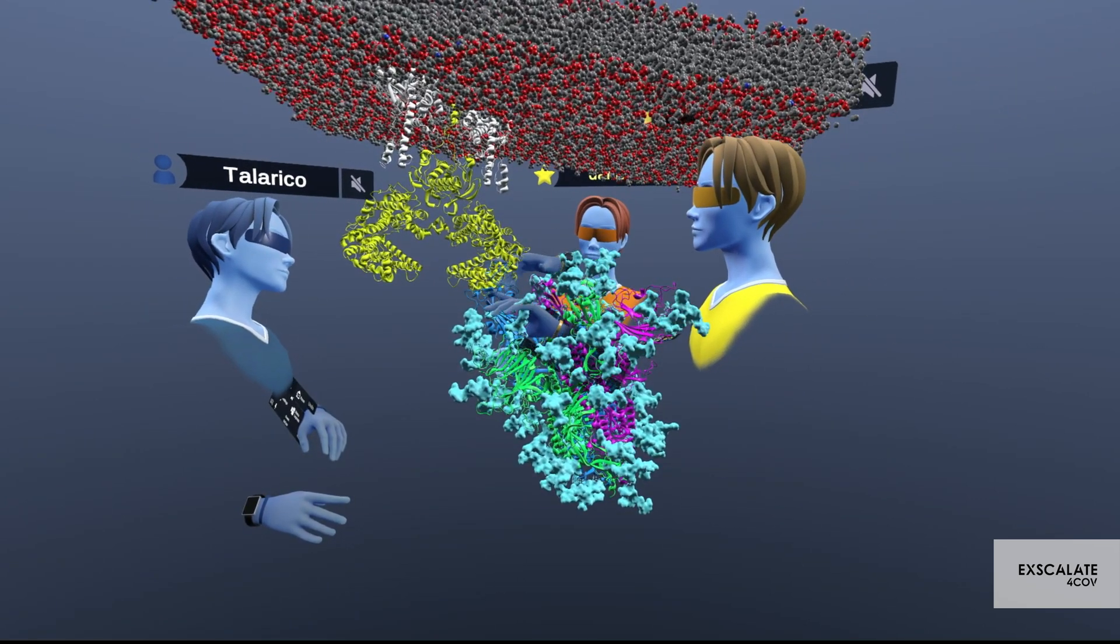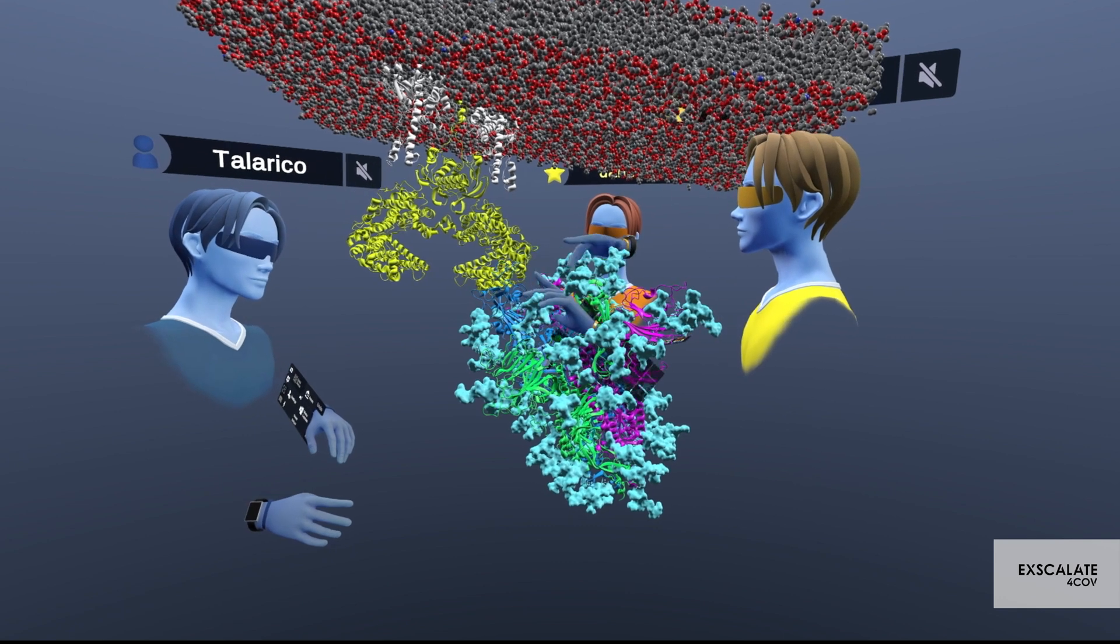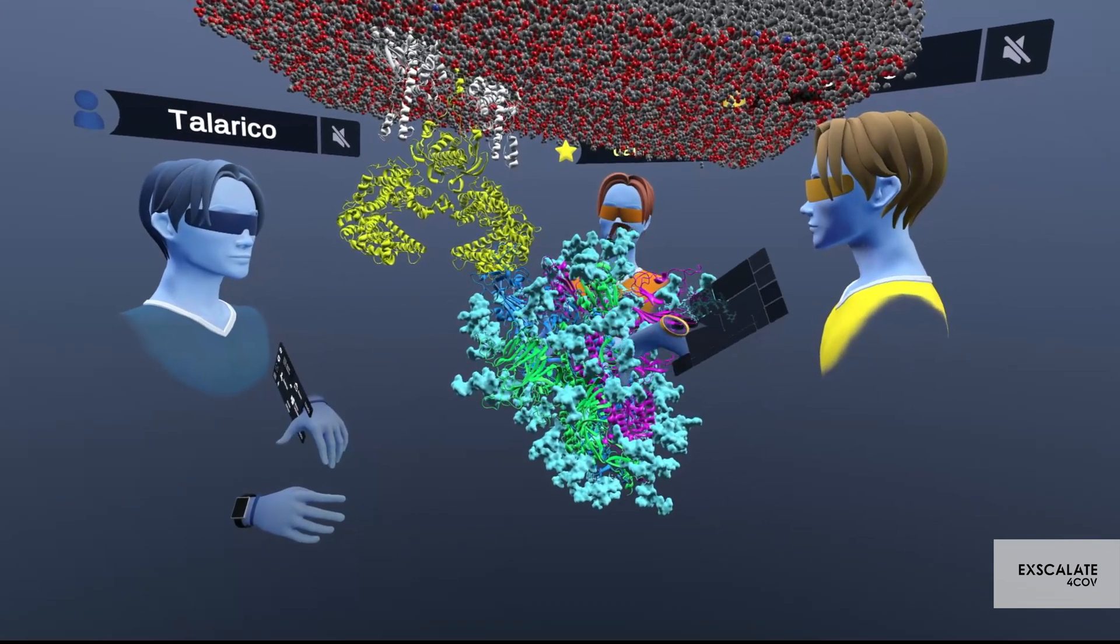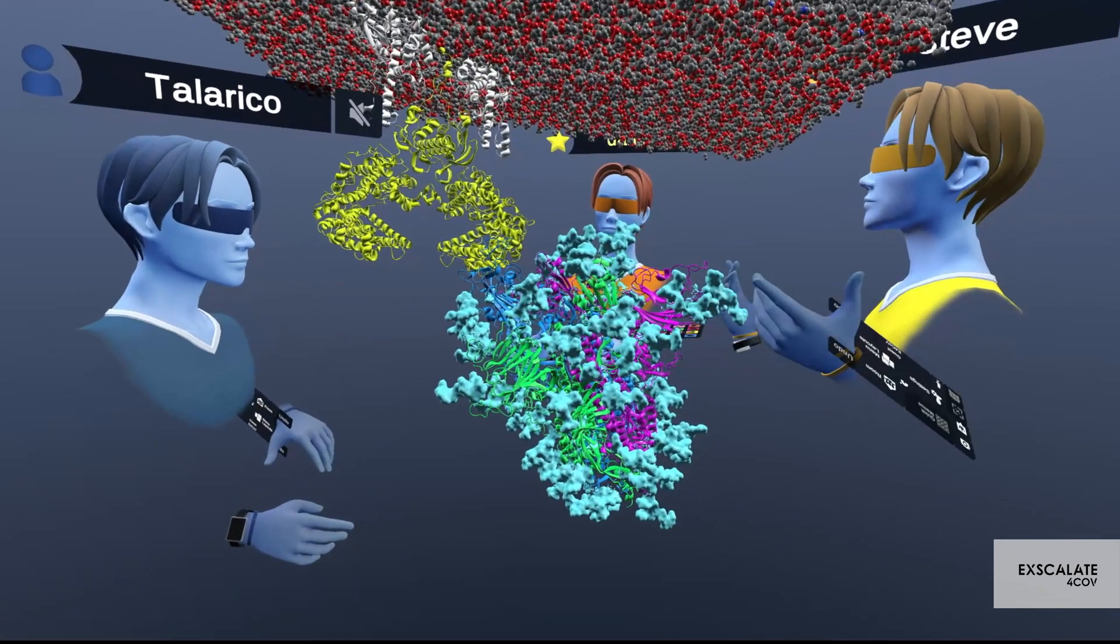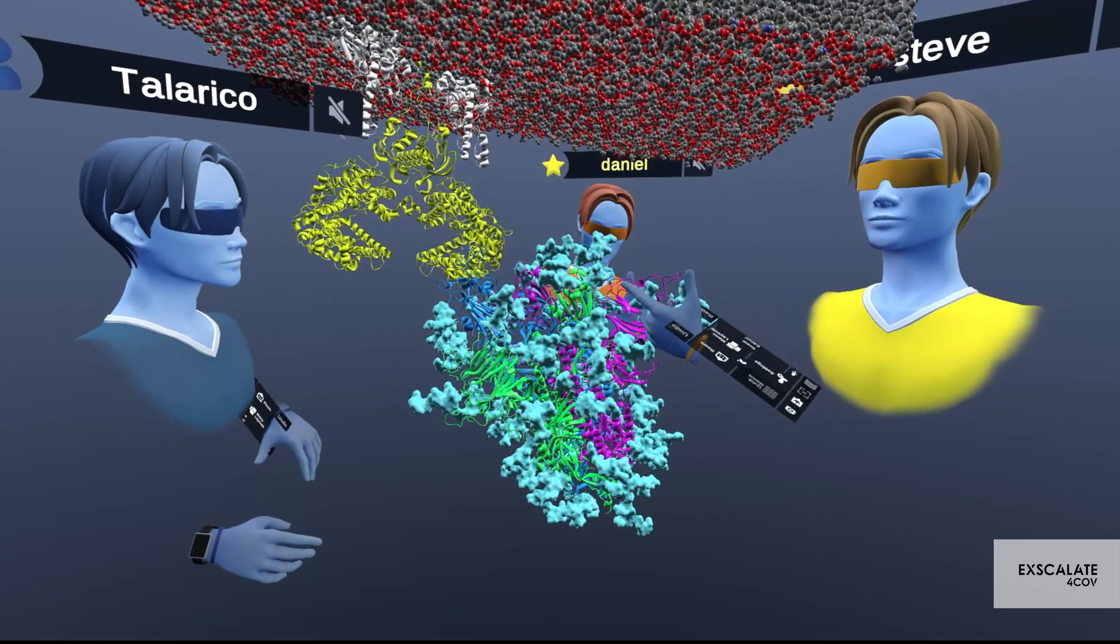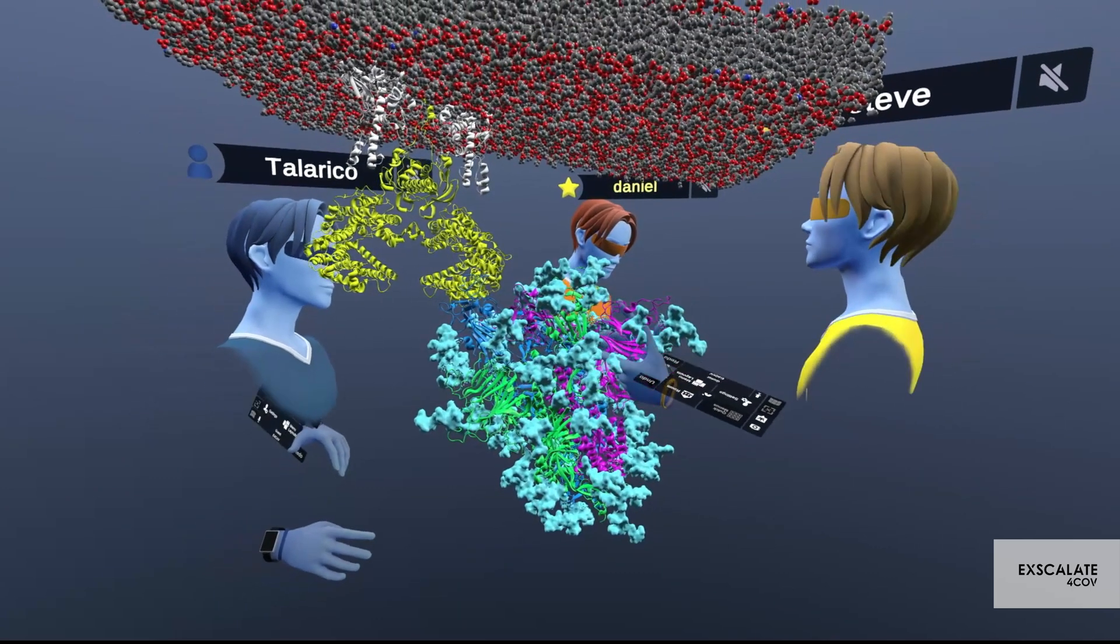Really we need to look at this receptor binding domain as well as the mutations that are in the spike. So let's go ahead and clear things up and clean it up and just get the spike and then we can analyze what's going on.